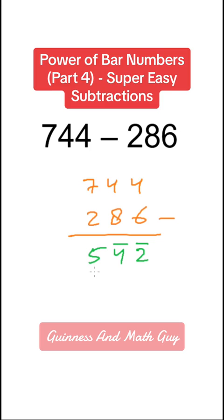Now this is same as 500 minus 42. So the answer is we decrease this 5 by 1 to make it 4 and apply our formula all from 9 and the last from 10 on this 42. So 4 from 9 is 5 and 2 from 10 is 8.